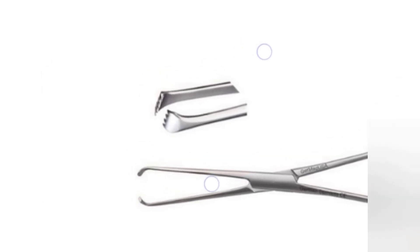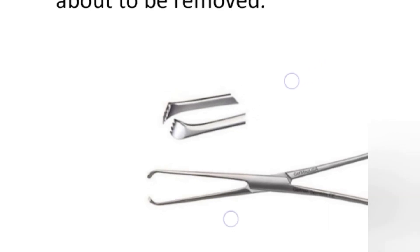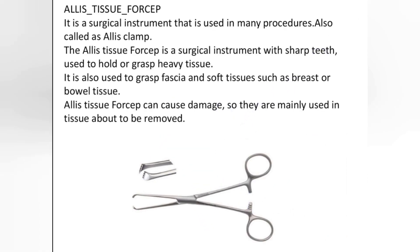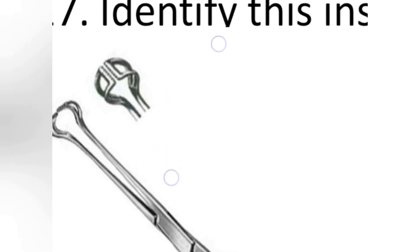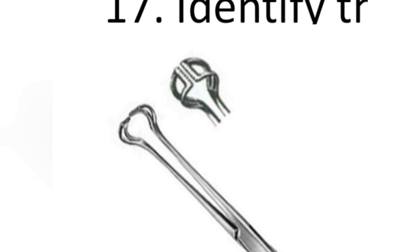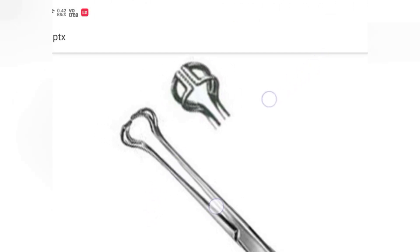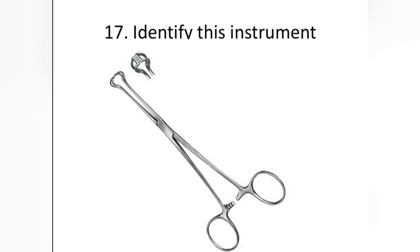For exam purposes, you should know this toothed holding instrument — the Allis Tissue Forceps. The clue is the toothed beak. The next question involves a similar type of instrument; it is also a holding instrument, but here you can see the end is non-toothed or smooth.